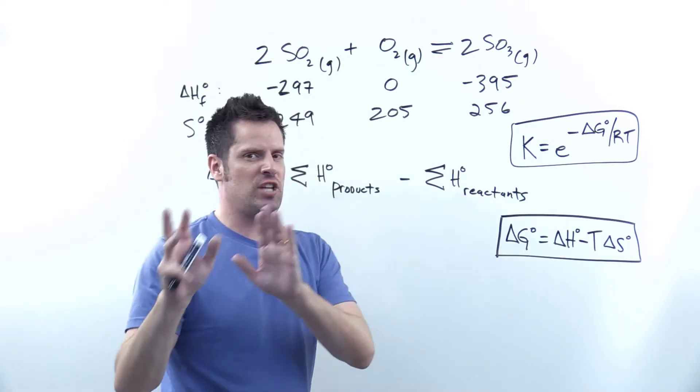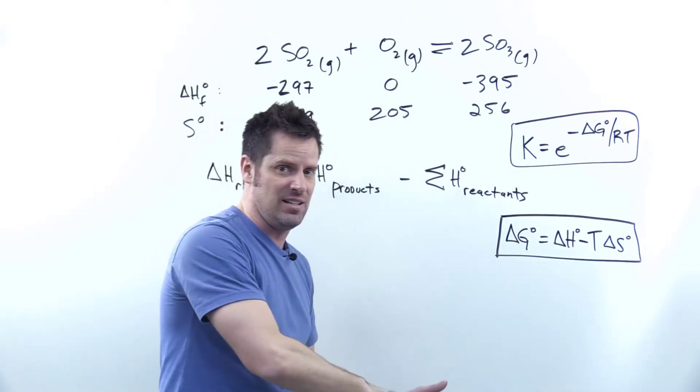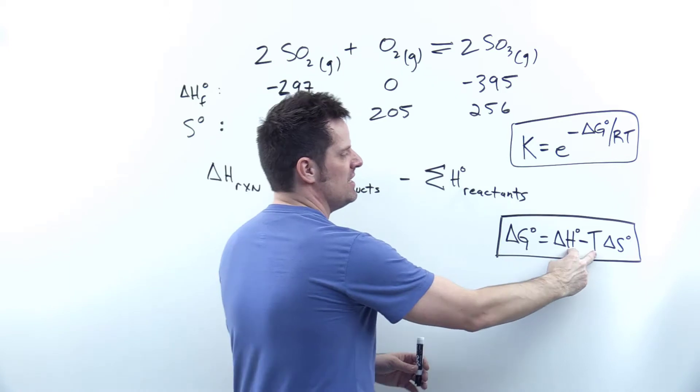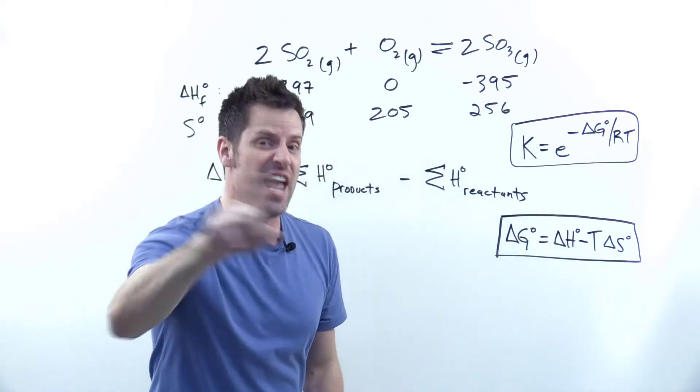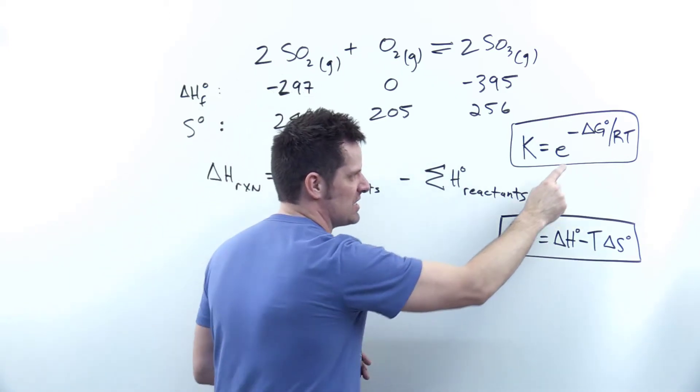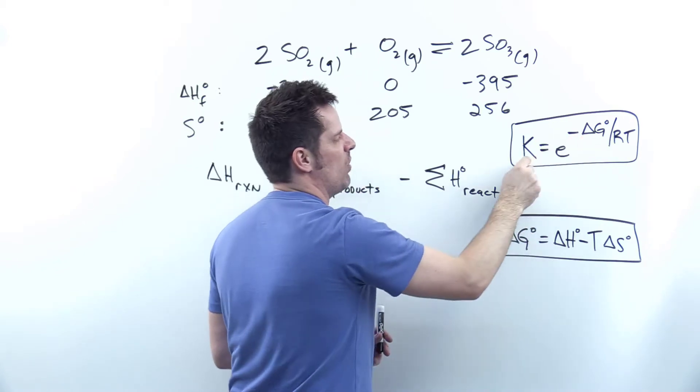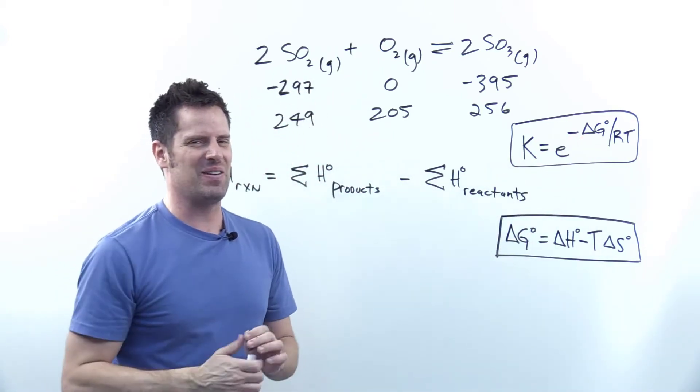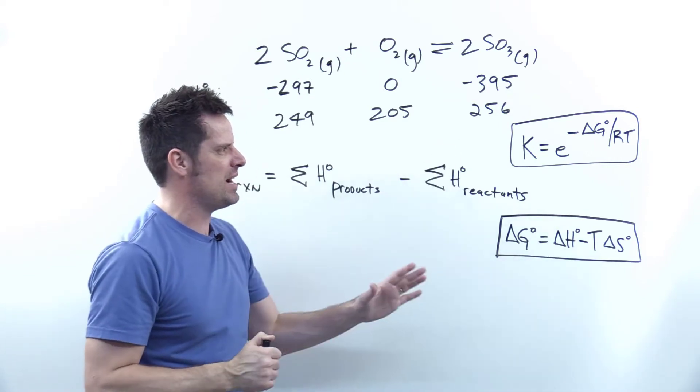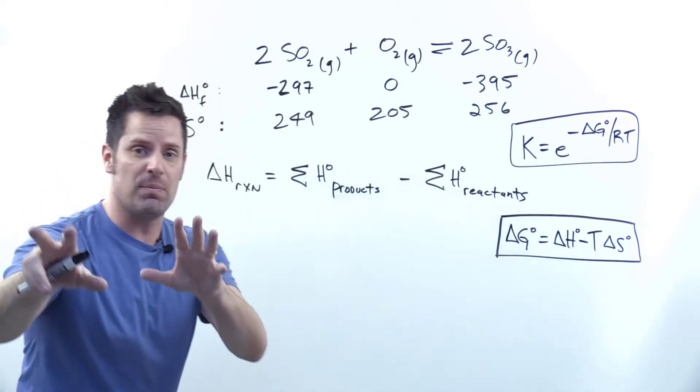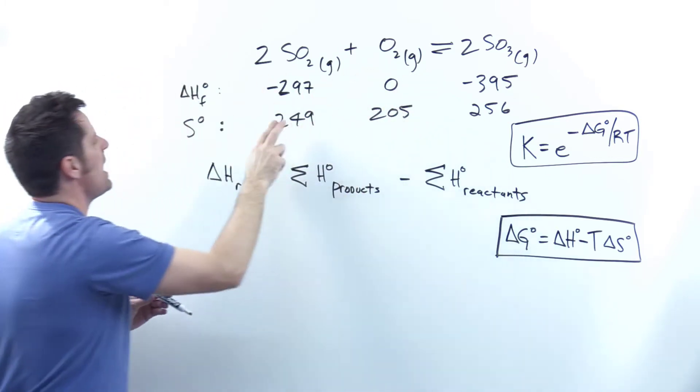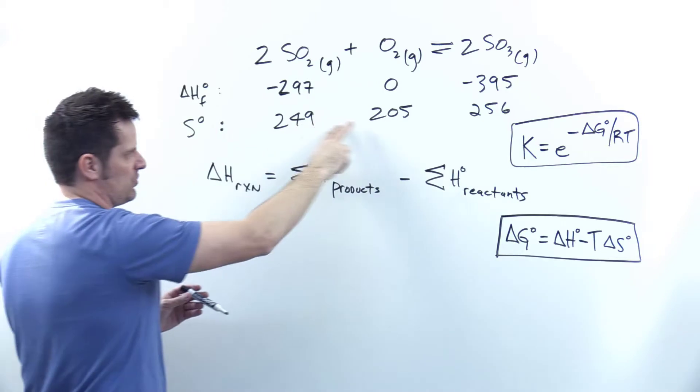I need to figure out delta H separately and delta S separately, then insert those two numbers into this equation to solve for delta G. Then I take delta G and insert it into this equation to figure out K. I've looked up the H of formation values and S entropy values for each substance using the table.